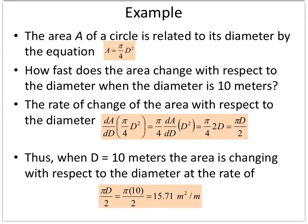Most importantly for engineers, this notation helps me with my units. When I'm finished, I know my units are going to be area units over diameter units. So I find this derivative — I pull the pi over 4 out front as a constant, take the derivative of D squared, which is 2D, and I get my rate of change. I then plug in 10 to get my answer.